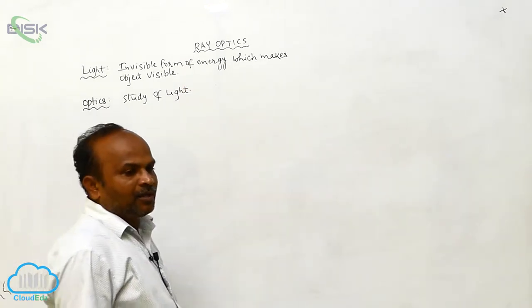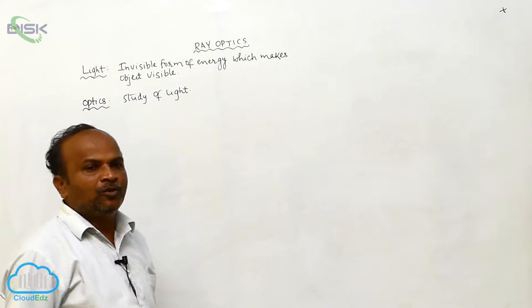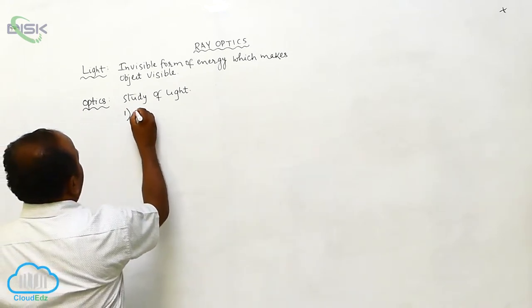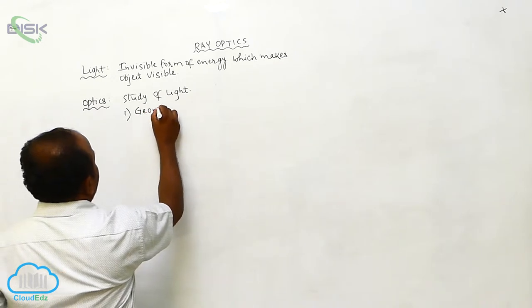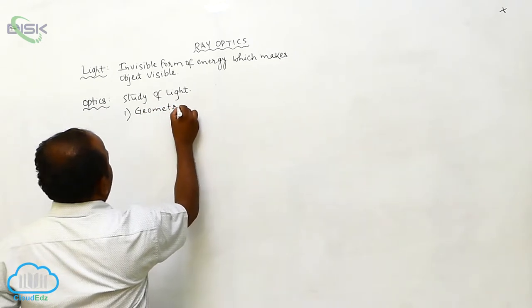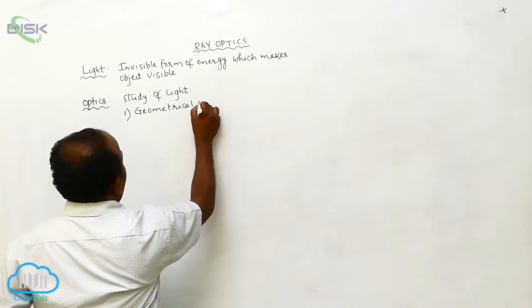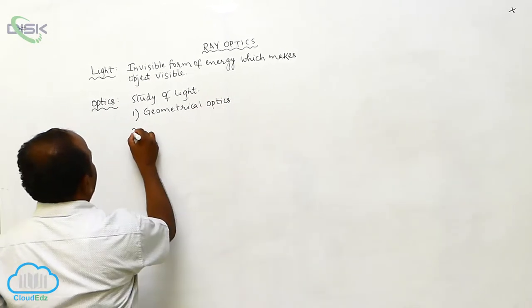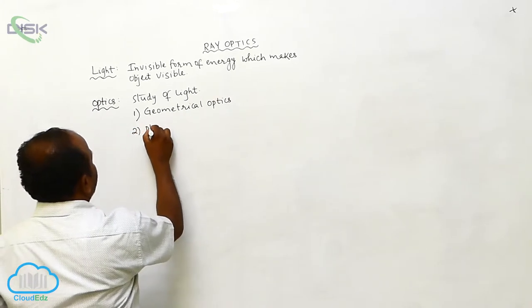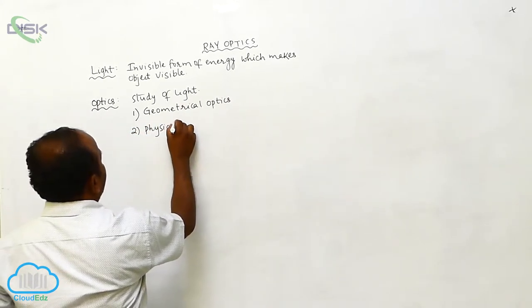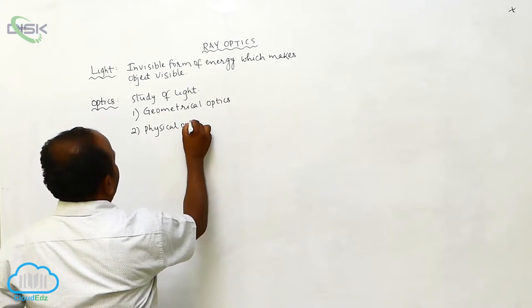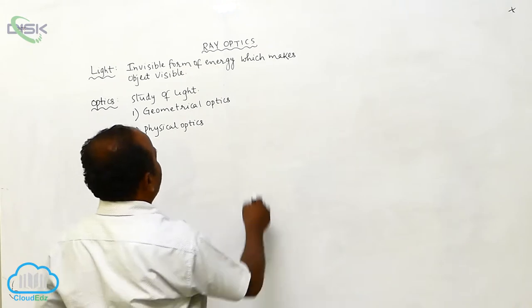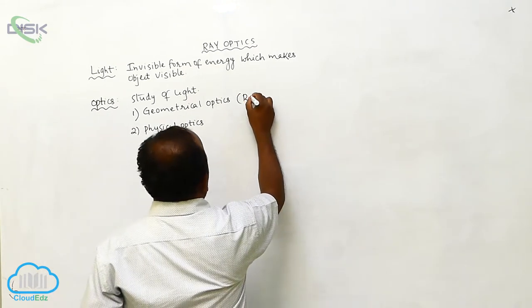This optics is divided into two types: first, geometrical optics; second, physical optics. This geometrical optics is also known as ray optics.